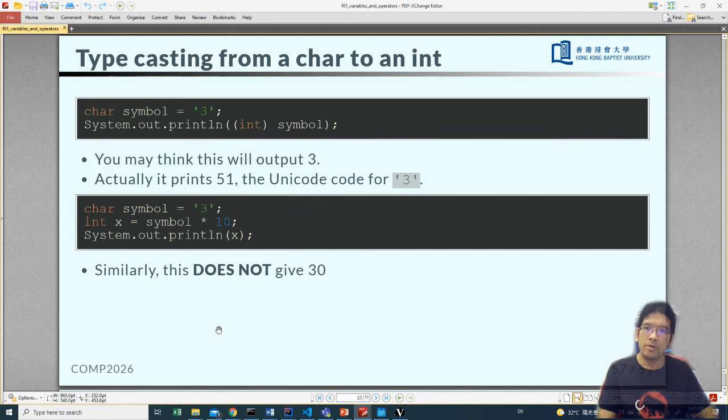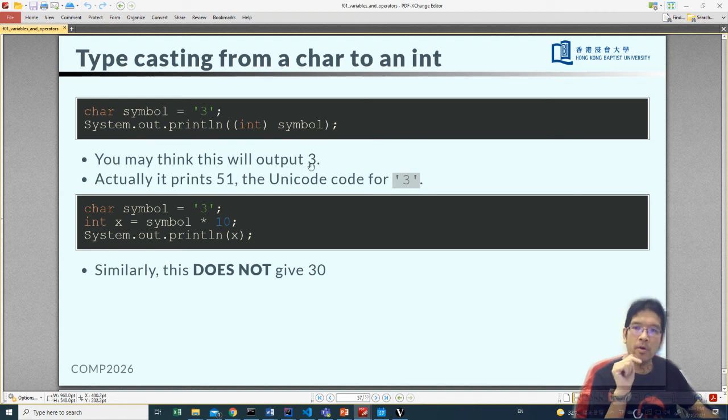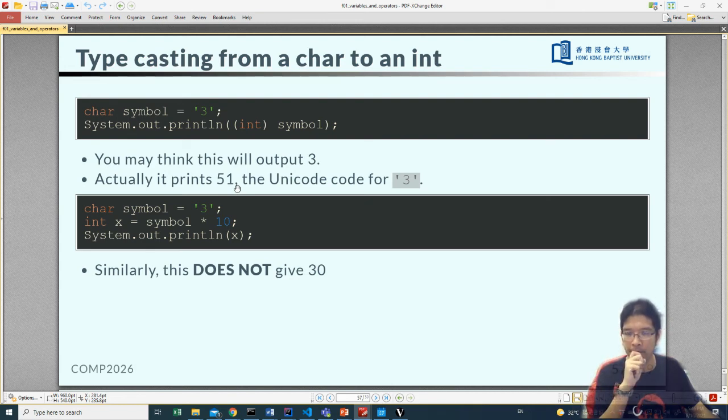Now, if you want to cast a character to integer, you can also do a casting like here. char symbol 3, and then you want to print the symbol. Now, you may think I want to have the number 3 here. It is not. This casting int symbol is a casting, yes, we agree, but it does not give you the value 3. Why? Because the unicode of 3 is 51. This casting, what this is doing, is treat this number symbol as an integer, where this character stores character 3 as 51. So this program actually prints 51 for you. This is not what you want, maybe.